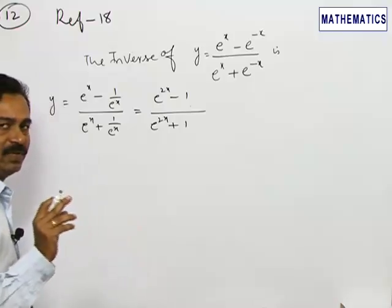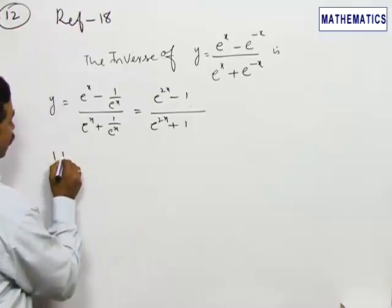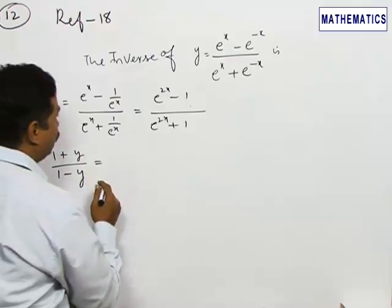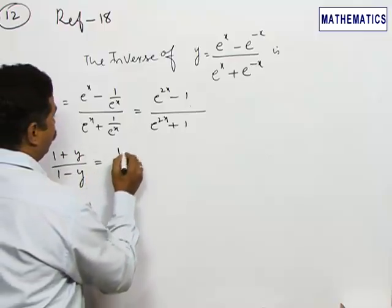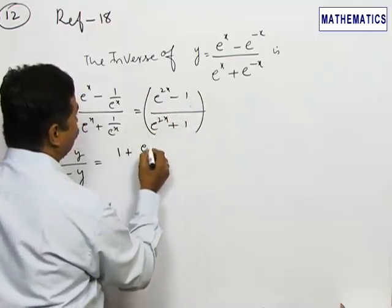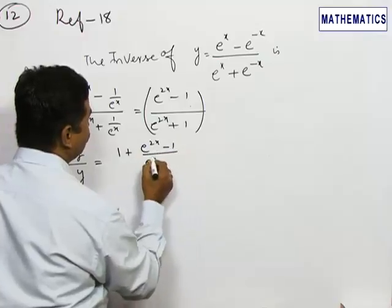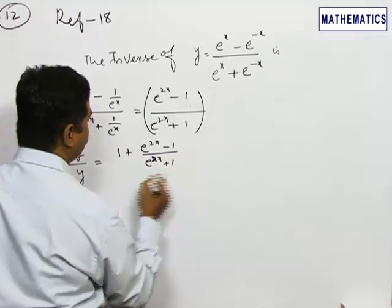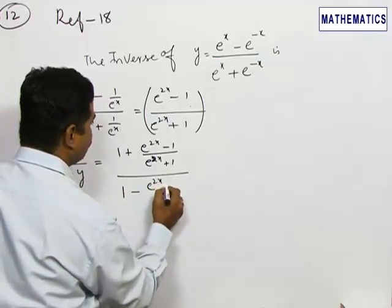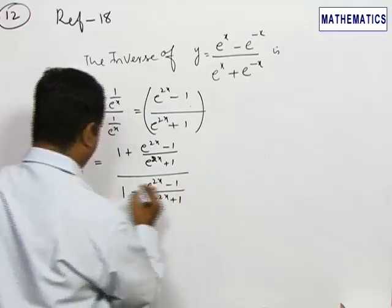Looking at the answer choices, it is given as (1+x)/(1-x). So, if we consider (1+y)/(1-y), that equals 1 plus (e^(2x) minus 1)/(e^(2x) plus 1) divided by 1 minus (e^(2x) minus 1)/(e^(2x) plus 1).